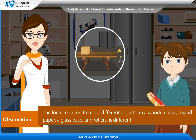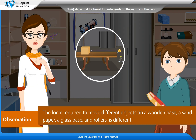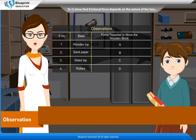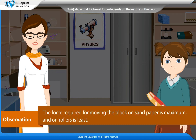Observation: The force required to move different objects on a wooden base, sandpaper, a glass base, and rollers is different. The bases tested are: wooden top, sandpaper, glass top, and rollers. The force required for moving the block on sandpaper is maximum and on rollers is least.